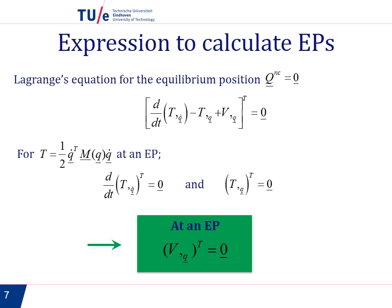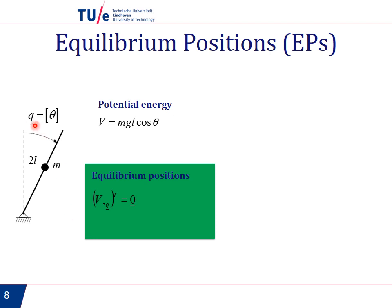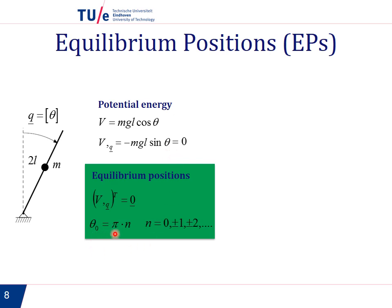Let us now look at the example of the pendulum. Considering the pendulum again with generalized coordinate theta, and taking length 2l so the distance from the center of mass to the origin is l, the potential energy for this pendulum is mgl cosθ. To find the equilibrium positions we need to solve ∂V/∂q = 0. So we obtain ∂V/∂q = −mgl sinθ, and the values of theta that satisfy −mgl sinθ = 0 are the equilibrium positions. Those are θ₀ = πn, with n = 0, ±1, ±2, etc.